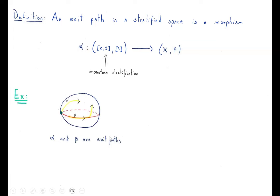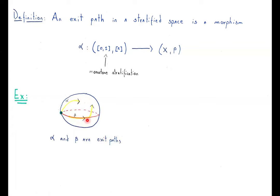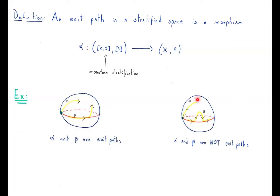For example, if I start in the zero stratum and go through the two stratum — that is an exit path: I go from the lower stratum to a higher stratum. Starting in the one stratum and going to the two stratum is also an exit path. The examples that don't work: if I start in the two stratum and go to the zero stratum, that is not an exit path. And if I start in the one stratum, go to the two stratum, then go back to the one stratum — that is not an exit path.